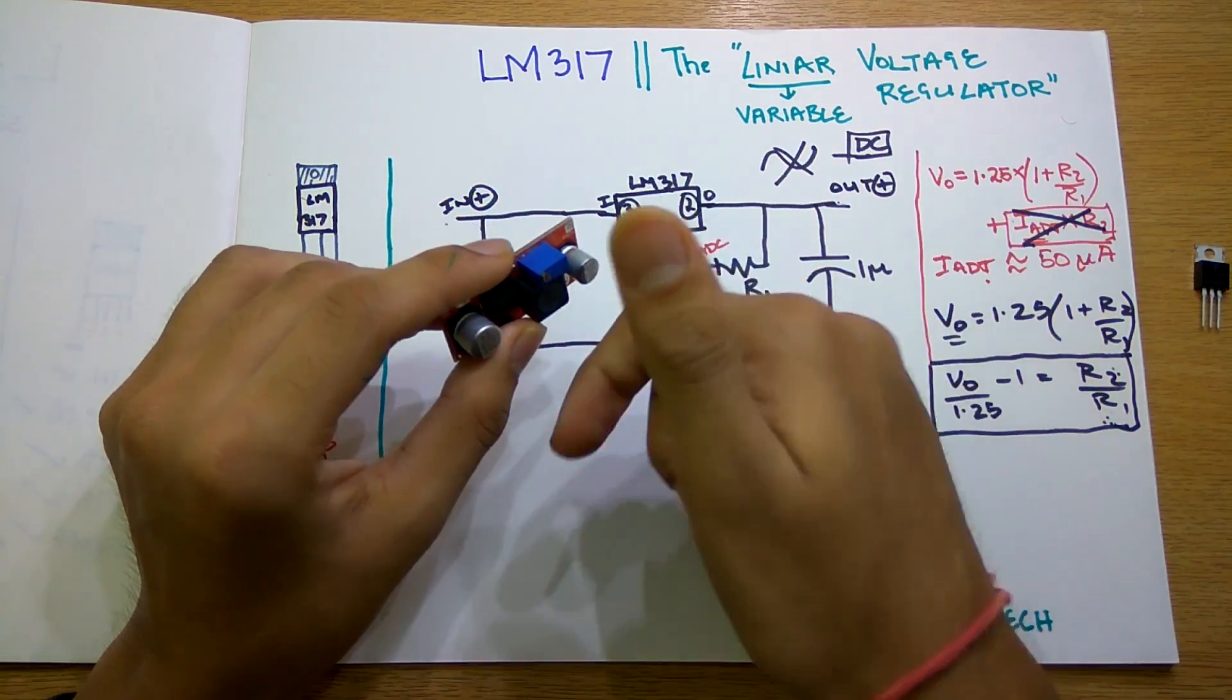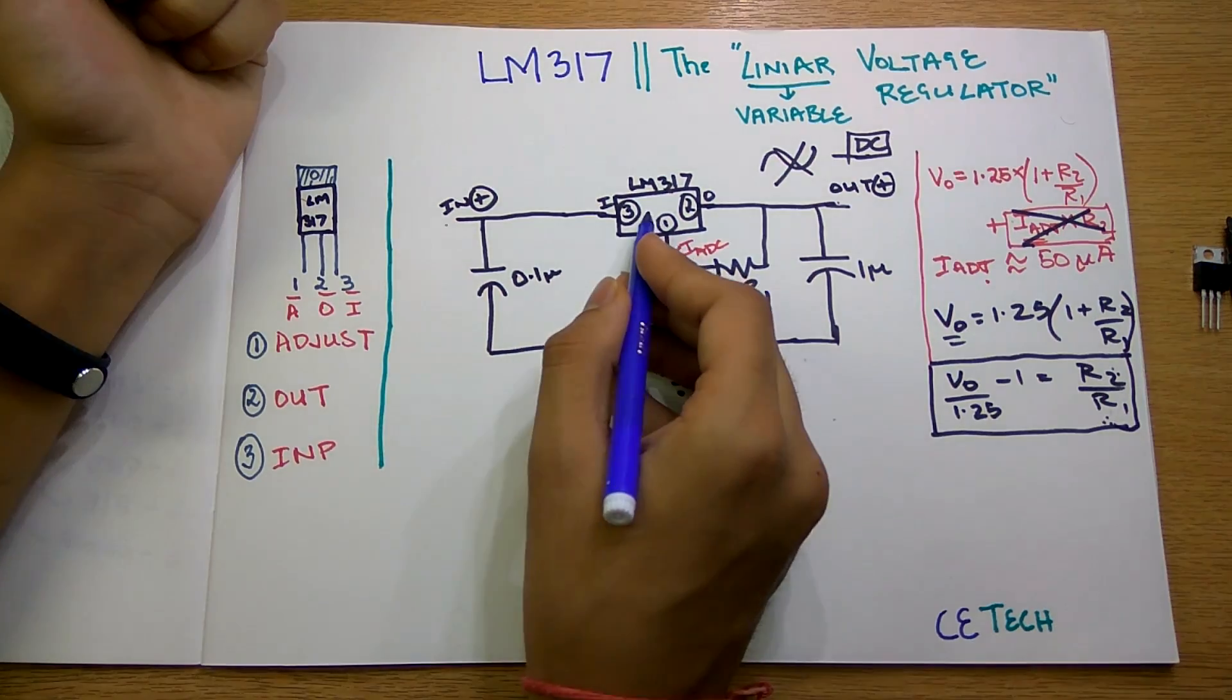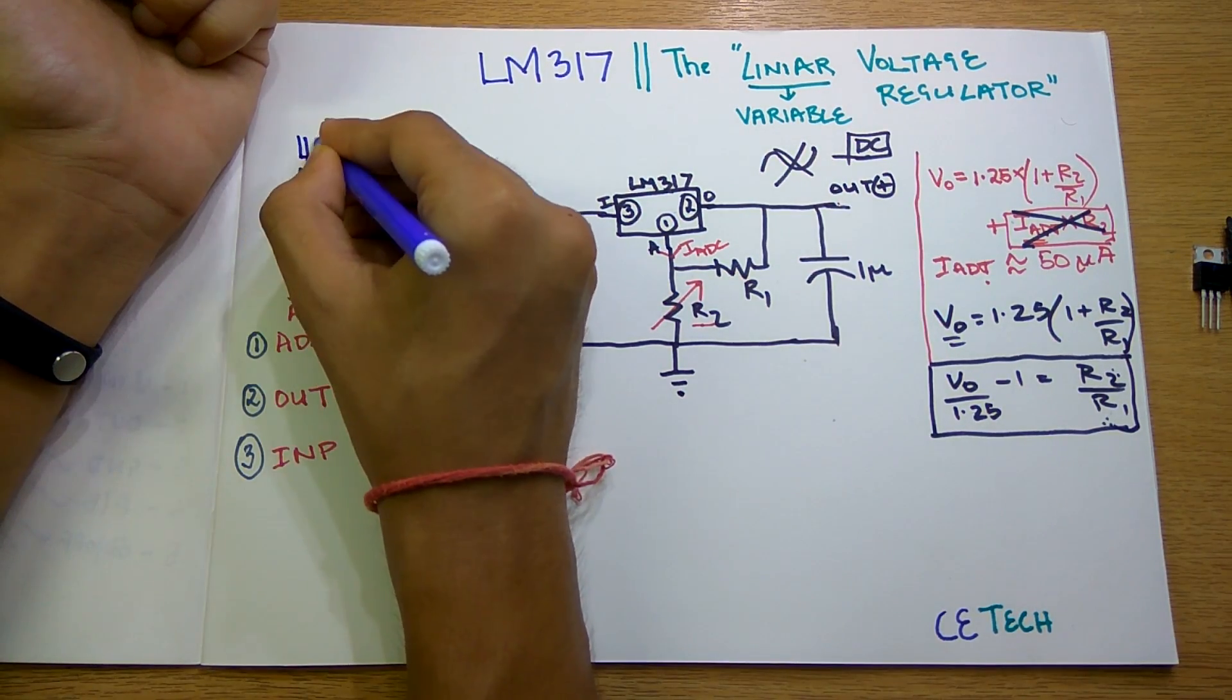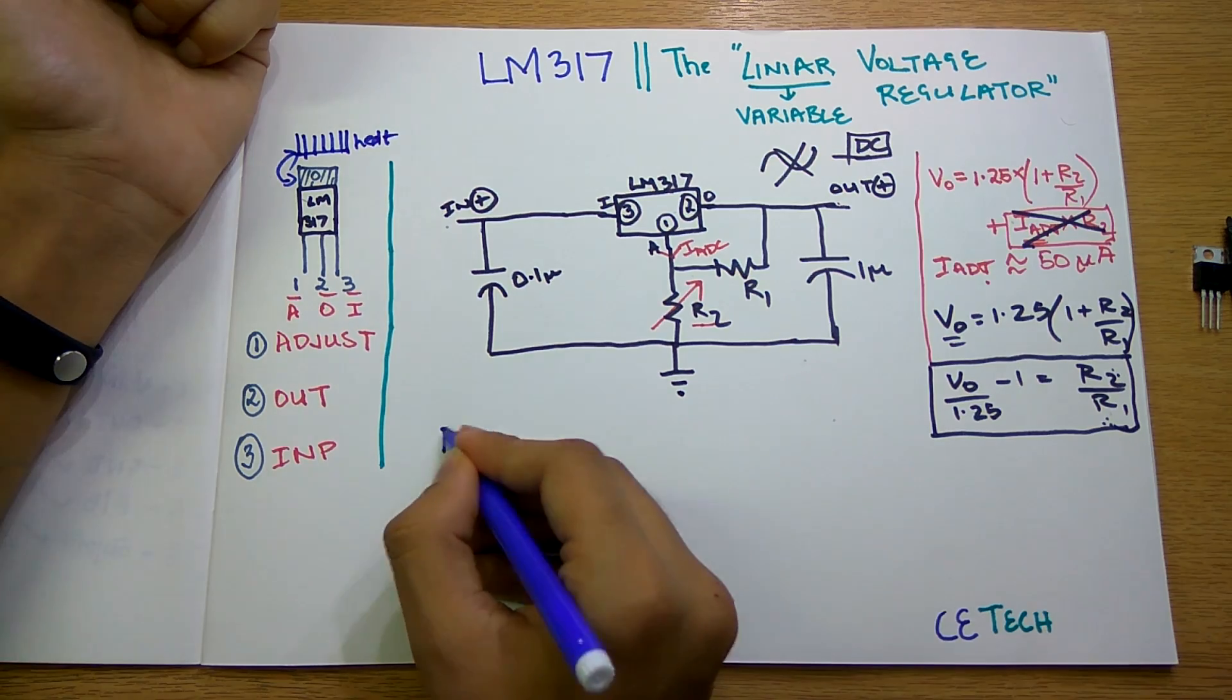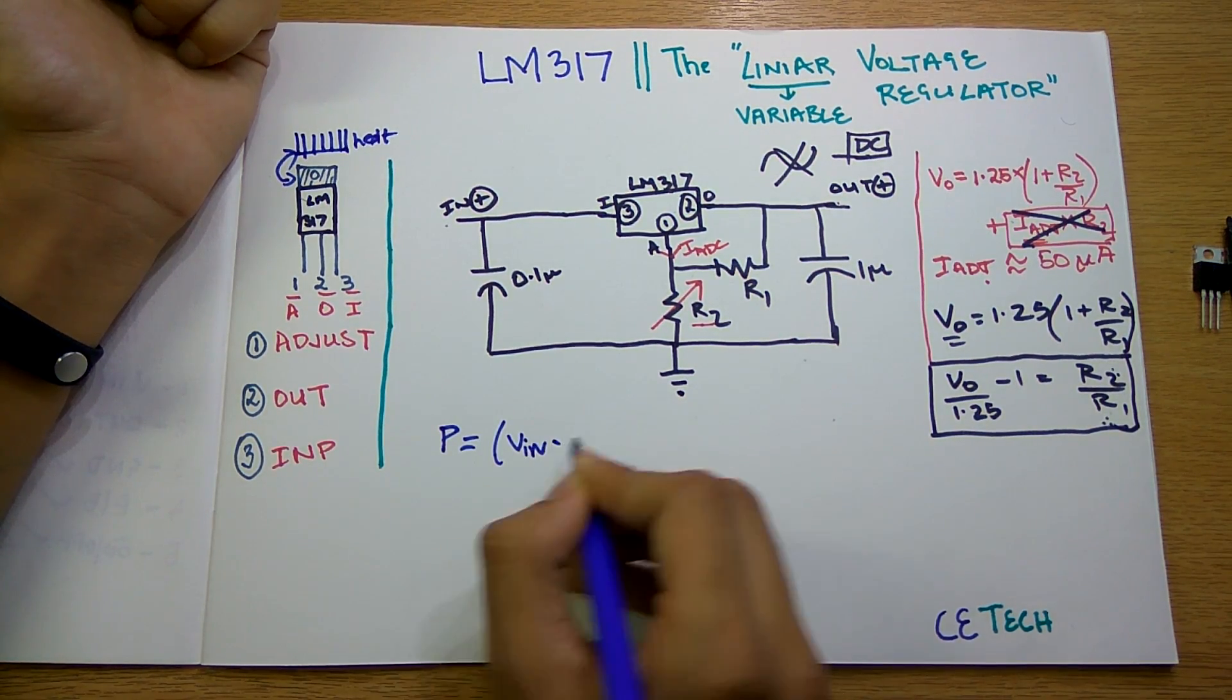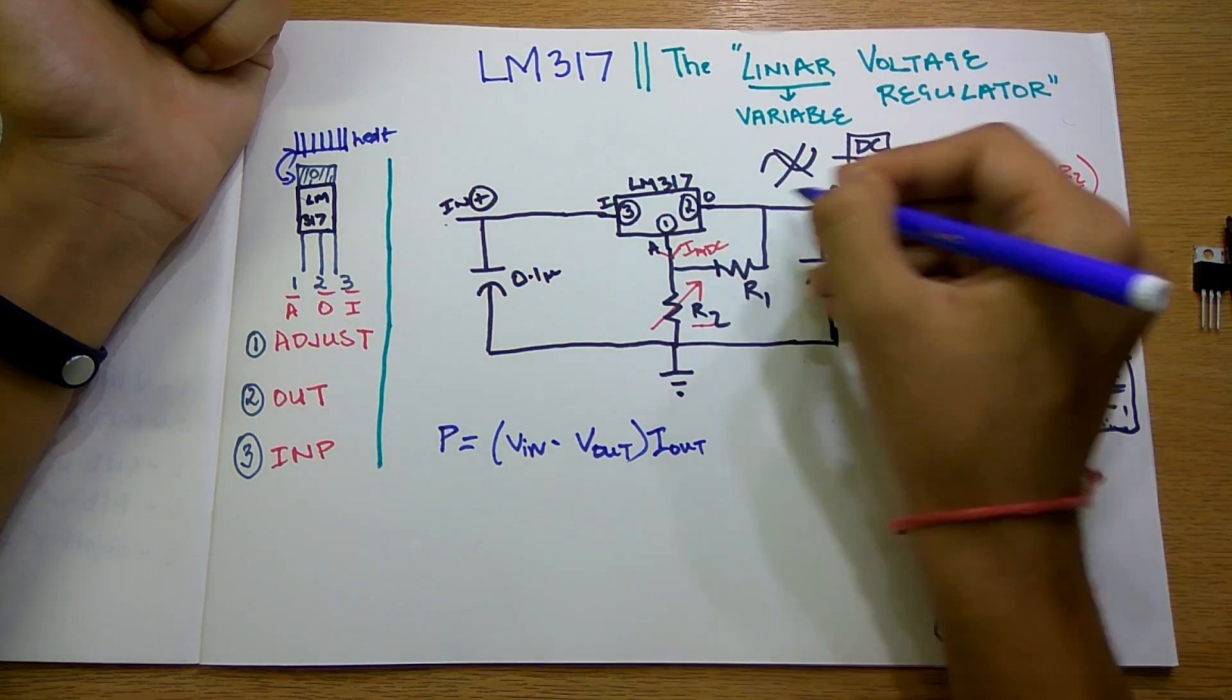But there are some limitations. Firstly, the power which is dissipated. I remember that you should always heat sink this baby up because it can release a lot of heat energy. That is calculated by a formula.